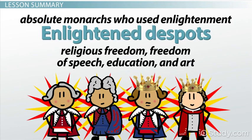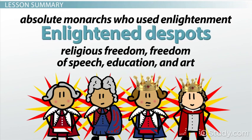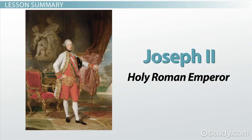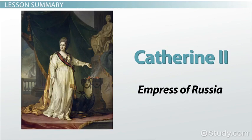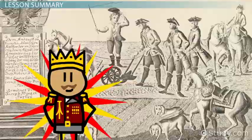Three of the greatest enlightened despots are Joseph II, Holy Roman Emperor; Frederick II, King of Prussia; and Catherine II, Empress of Russia. These monarchs ruled with absolute power, but still supported many individual rights for their people, and sponsored art, education, and philosophy in their realms. For the enlightened despots, absolute power and individual rights turned out to be pretty complementary after all.